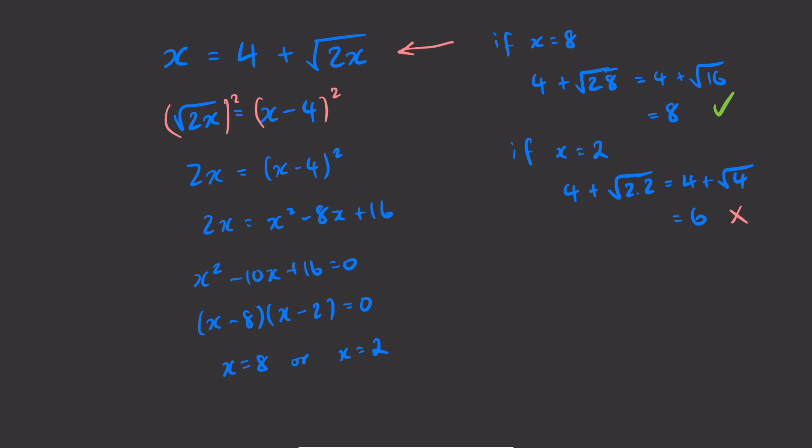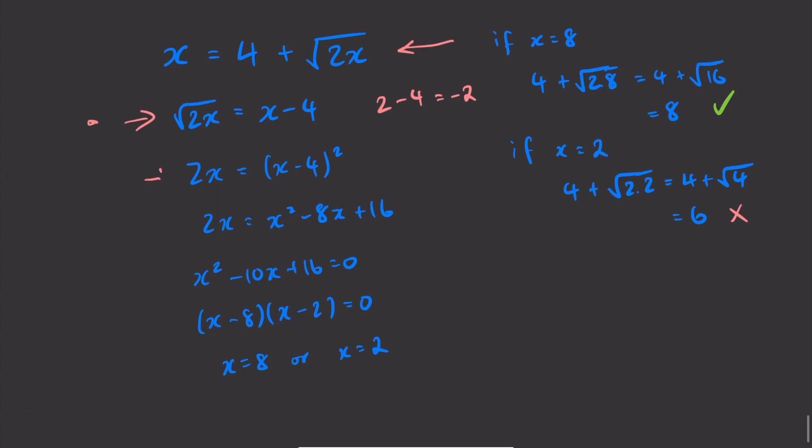Well, when we square this equation in this line, we end up with a new solution. Notice that in this equation on this line, 2 is not a valid solution because we get 2 take 4 here, which is negative 2. This is not going to give us a real solution. We can't have a square root equal to a negative number. But here on the next line we get 2 take 4 squared, which then becomes negative 2 squared, which then becomes positive 4. So we add a valid solution there when we square both sides because we get rid of that negative.